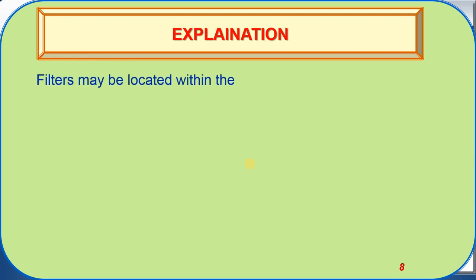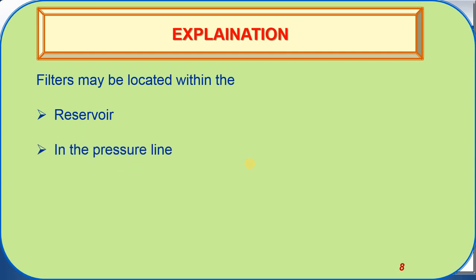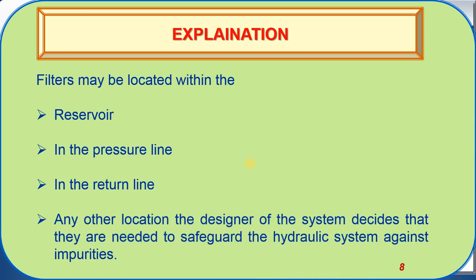A filter may be located within the reservoir, in the pressure line, in the return line, or any other location the designer of the system decides is needed to safeguard the hydraulic system against impurities.